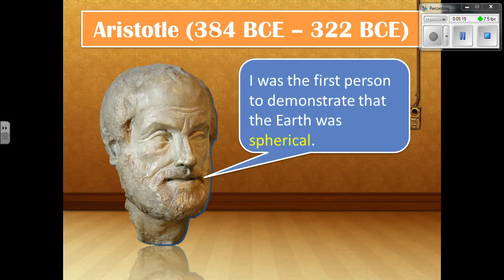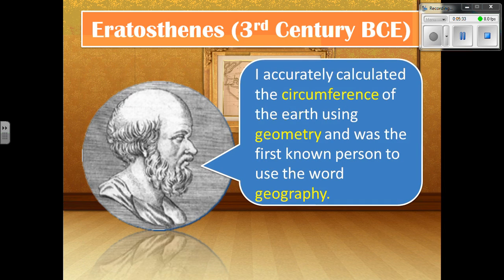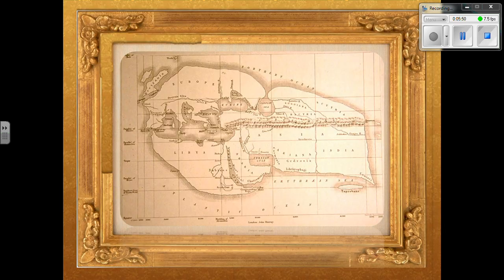Some important geographers: Aristotle was a philosopher and a geographer, and he was the first person credited with demonstrating that the Earth was spherical. Eratosthenes was a geographer and mathematician who calculated the circumference of the Earth — very instrumental in geometry as well as geography. This is one of the maps associated with him. I want you to look at it, examine the descriptions, the landforms, and we'll do a comparison a little bit later.